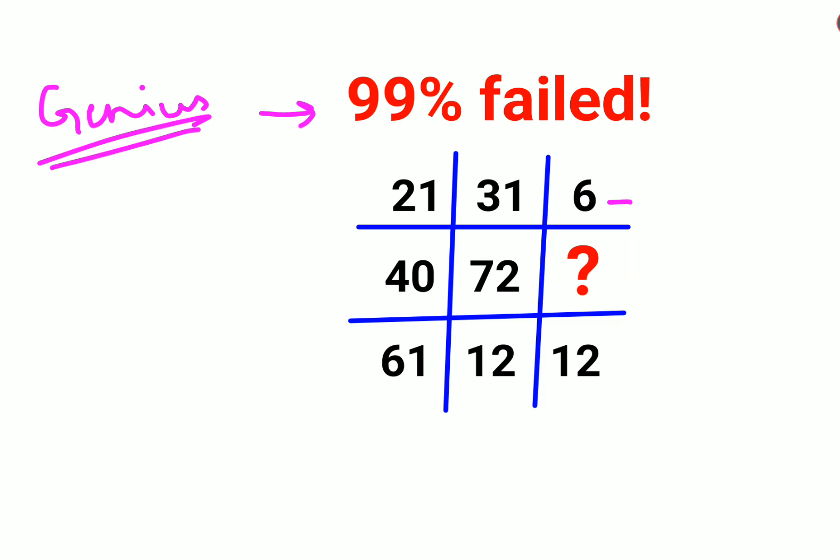So now in this case, what you should do is focus on the individual numbers. So 2 into 1 gets you 2, 3 into 1 gets you 3, and when you multiply both of them, you get the answer as 6. Similarly, 6 into 1 gets you 6, 1 into 2 gets you 2. Multiply both of them, you get the answer as 12.